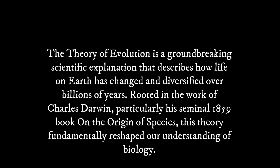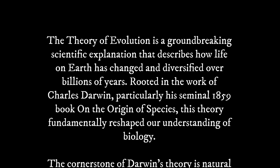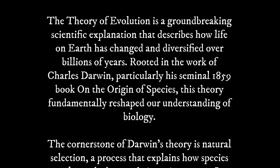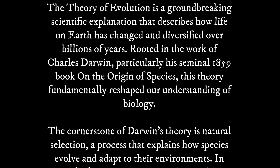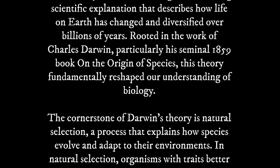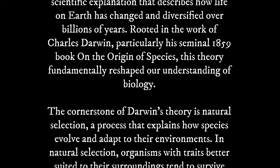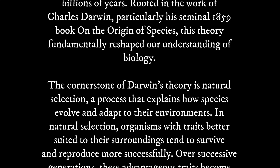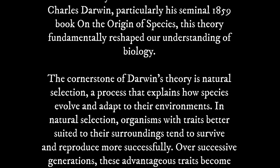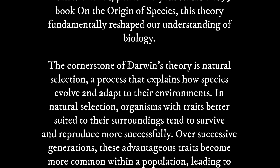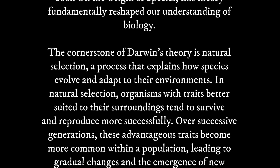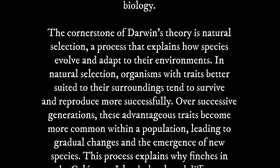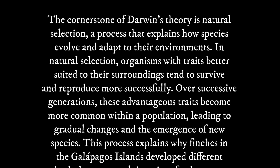The cornerstone of Darwin's theory is natural selection, a process that explains how species evolve and adapt to their environments. In natural selection, organisms with traits better suited to their surroundings tend to survive and reproduce more successfully. Over successive generations, these advantageous traits become more common within a population, leading to gradual changes and the emergence of new species.